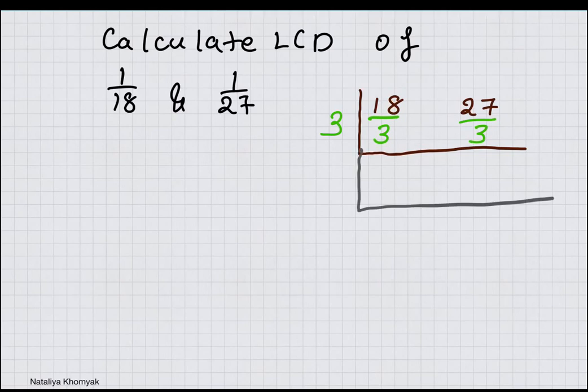I know that 3 will go into 18 and 27 at the same time. So we have 3. 18 divided by 3 will produce a 6. 27 divided by 3 will produce a 9.